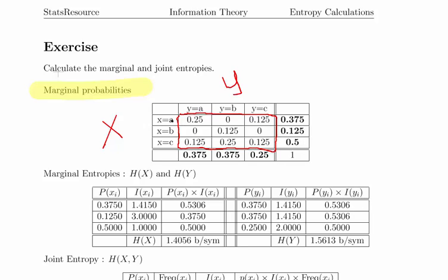And likewise for X, the inputs, the probability of input equals A is 0.375, the probability of X equals B is 0.125, and the probability of X equals C is 0.5.